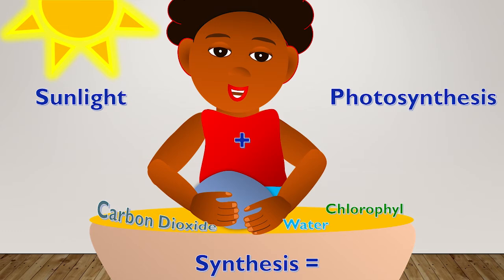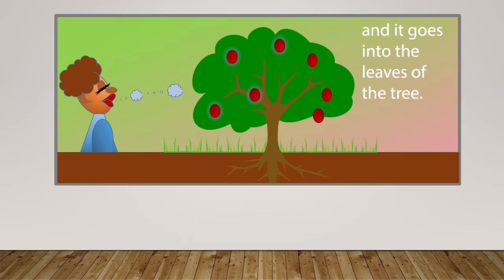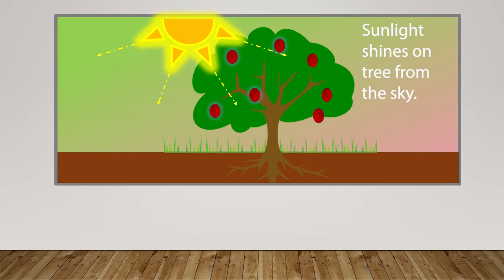Sunlight plus synthesis equals photosynthesis. We breathe out carbon dioxide, and it goes into the leaves of the tree. Water flows into the leaves of the tree from the roots. Sunlight shines on the tree from the sky.